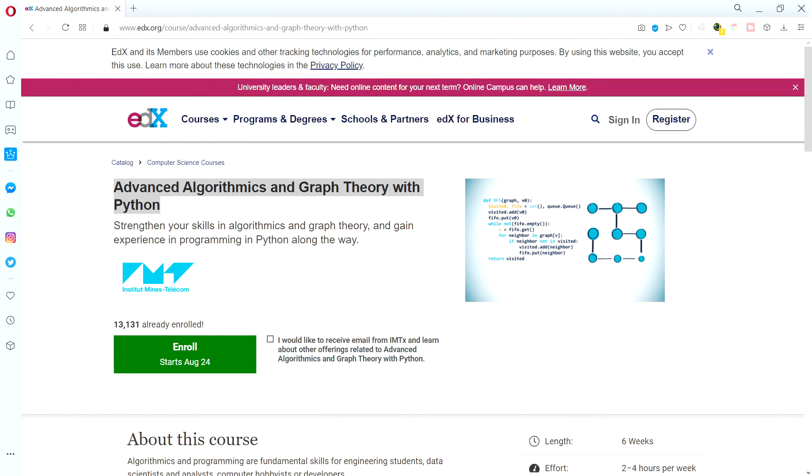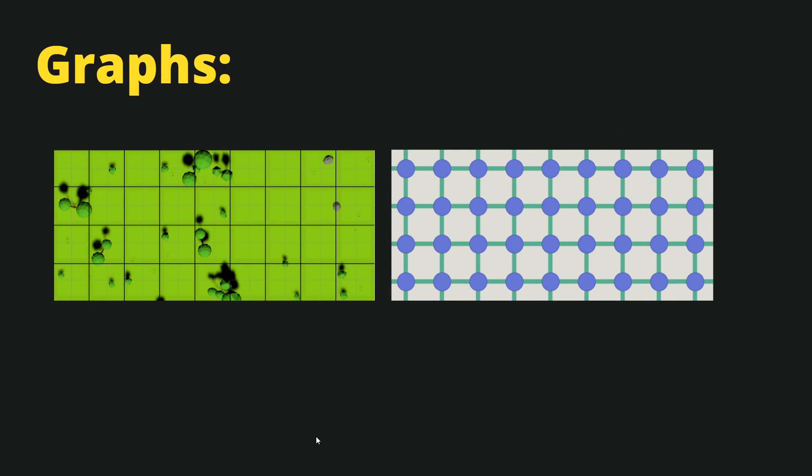And if you want to know more about graphs and algorithms such as A*, I recommend you visit edx.org where you can for free enroll for a course called Advanced Algorithms and Graph Theory with Python. In the next video, we will create a starting project, get the resources from the github link that I have posted in the description and see how we can start creating our simple city builder. See you in the next video.